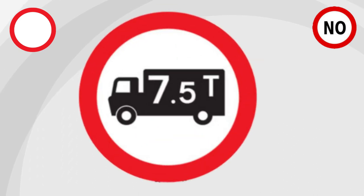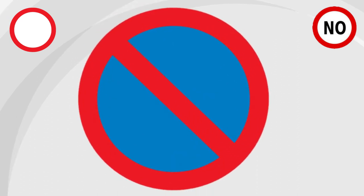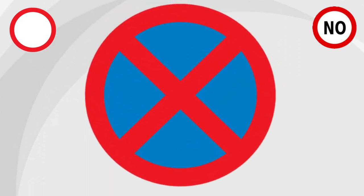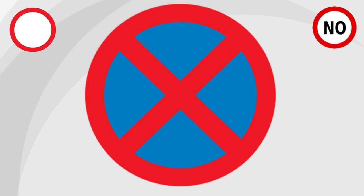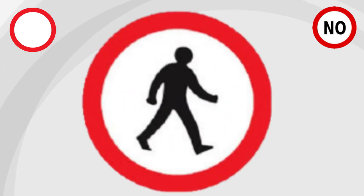No vehicles over the weight in tons. No parking. No stopping. No pedestrians. Those were the signs giving negative orders. Now let's move on to the signs giving positive orders.